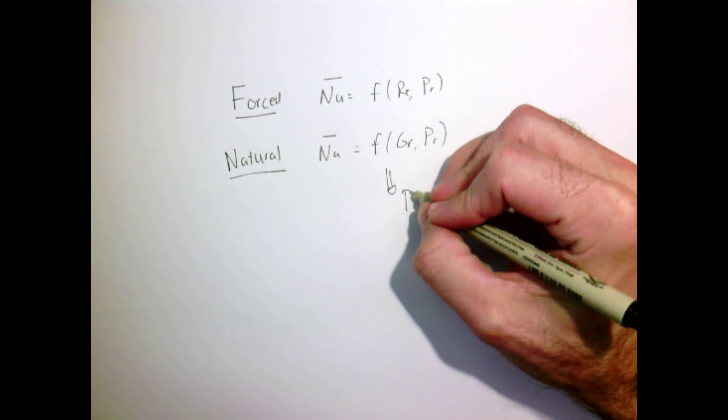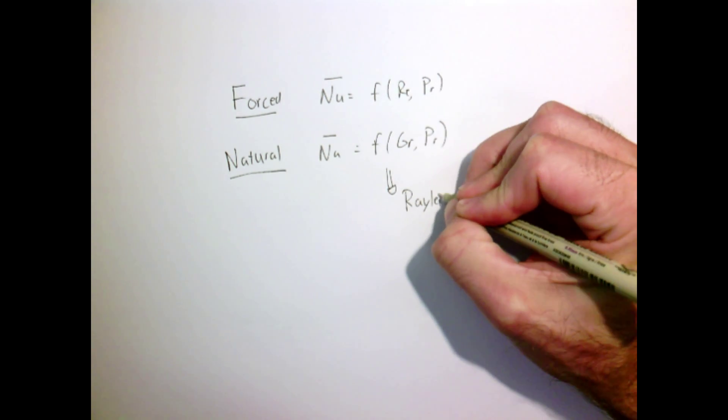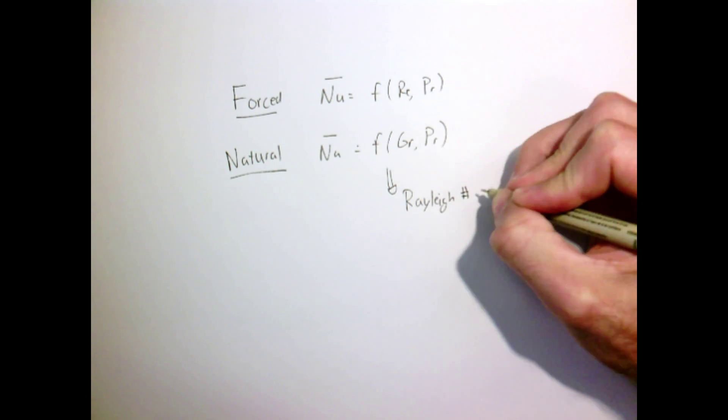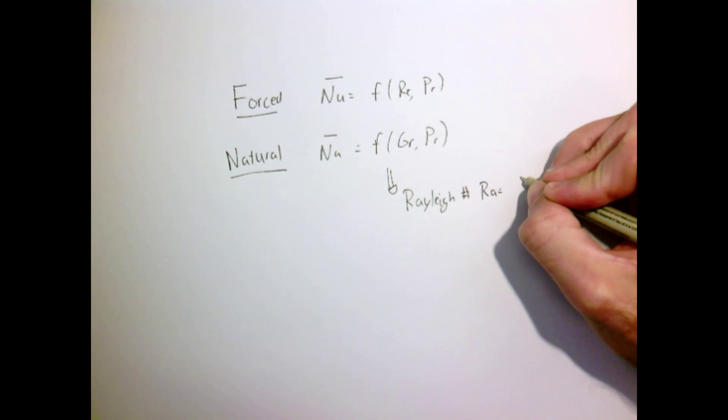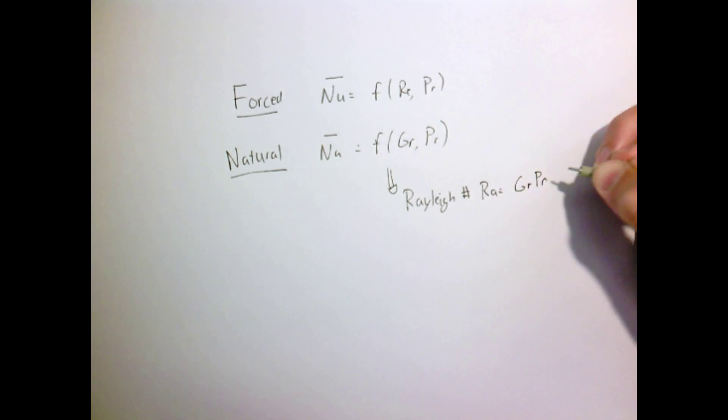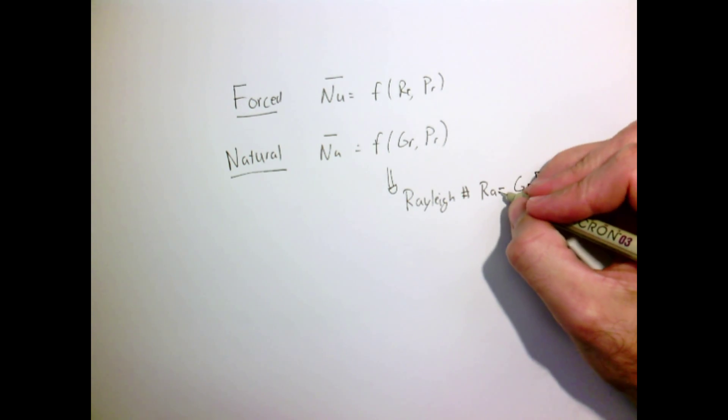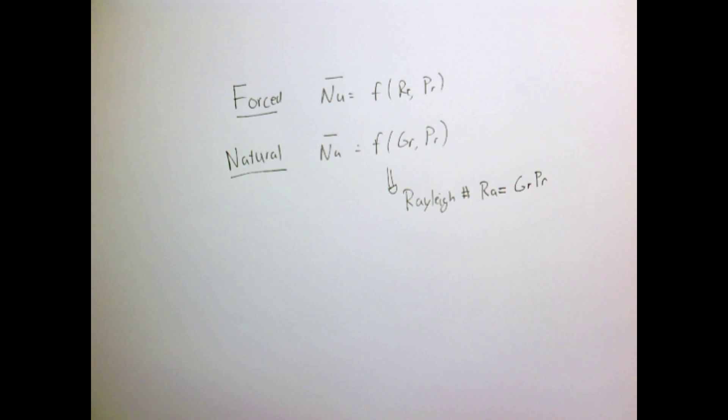It's pretty common to find correlations in textbooks that will use the Rayleigh number instead of the Grashof number, but the Rayleigh number is just defined as the Grashof number times the Prandtl number. It's a little bit silly to have these numbers that are products of numbers and give them new names, but hey, this is the world we live in. It's not the one that I invented.